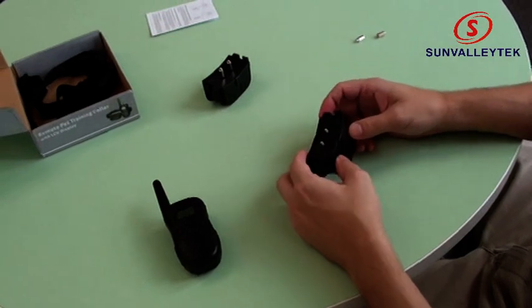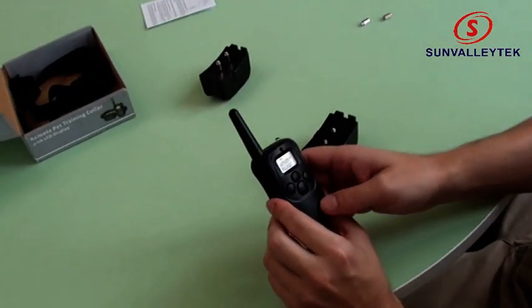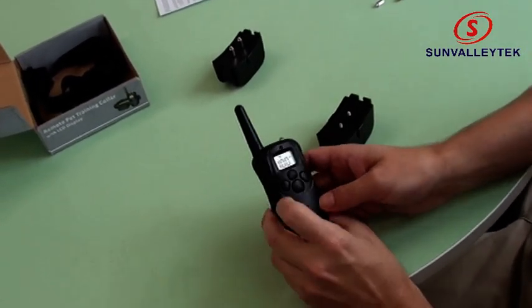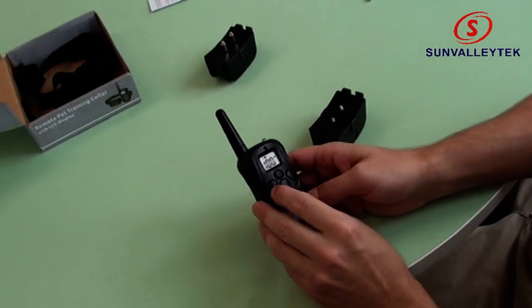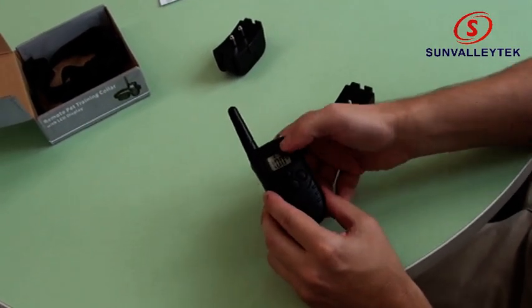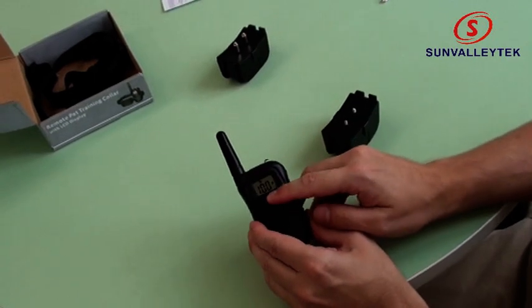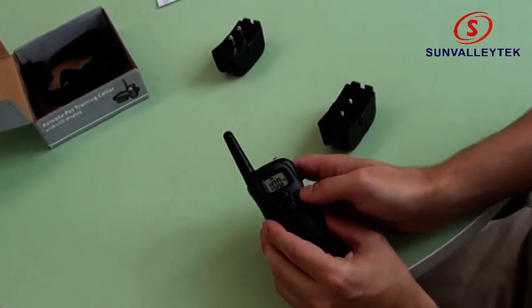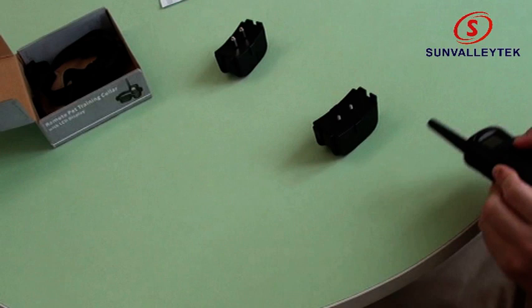So, our number two receiver is ready to go, so let's see if it's working. We're on channel one. Let's switch it to channel two. There we go. We're on channel two. We're in the vibrate mode at 100%. So let's see what happens. There we go. Watch again.